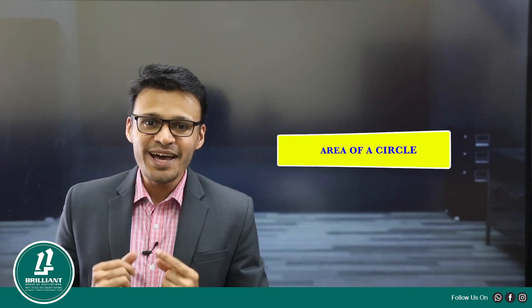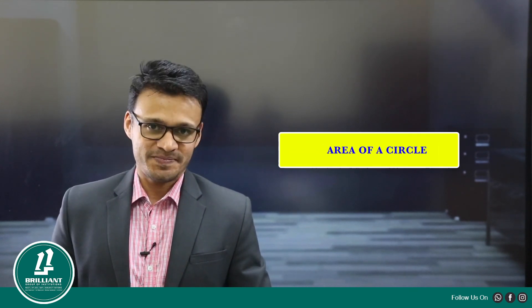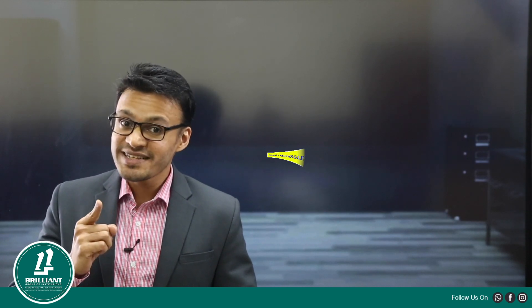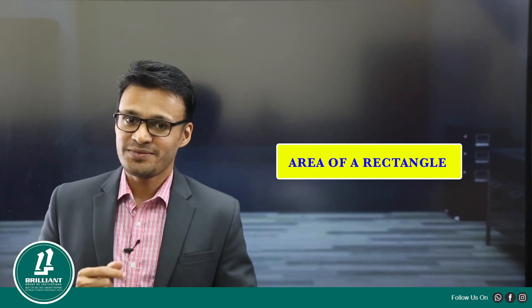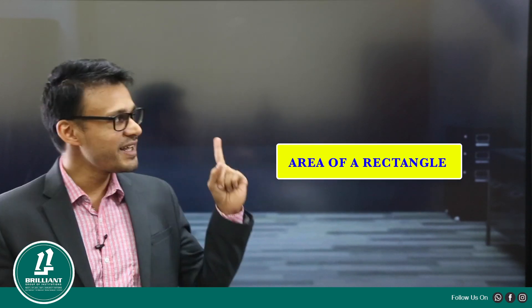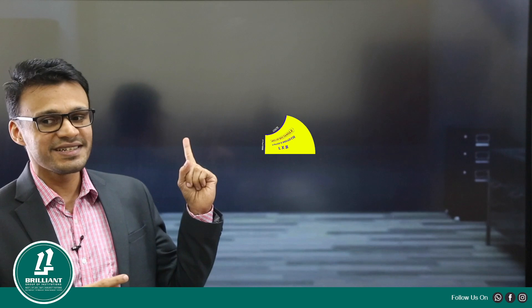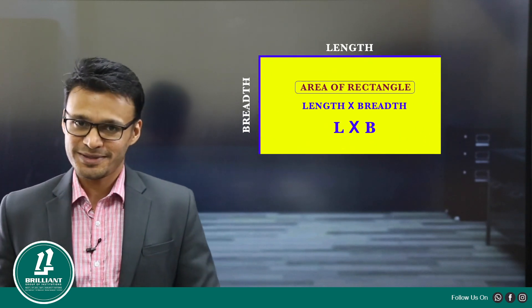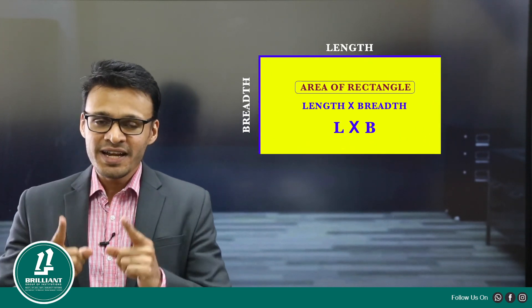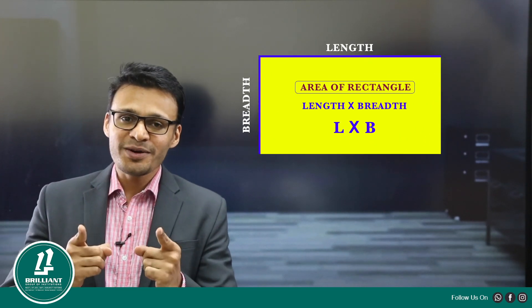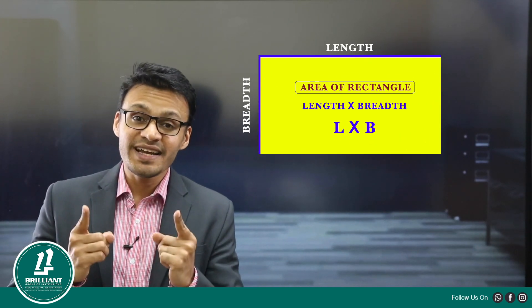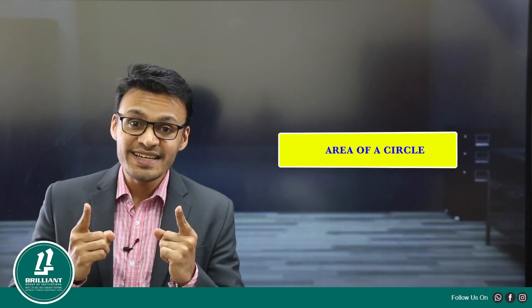Now let us see how to find out the area of a circle. Before learning the area of a circle, we should know what is the area of a rectangle. Area of a rectangle is length into breadth. Now we are going to find out the area of a circle. We have a circle.